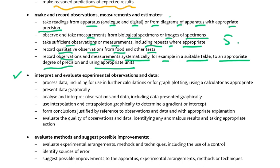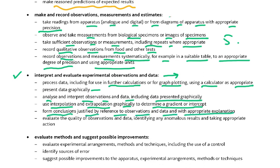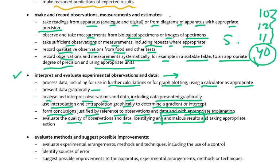Then interpret and evaluate experimental observations and data. Process data including for use in further calculations or graph plotting using a calculator as appropriate. Present data graphically. Analyze and interpret observations and data including data presented graphically. Use interpolation and extrapolation graphically to determine a gradient or intercept. Form conclusions justified by reference to observations and data with appropriate explanations. Evaluate the quality of observations and data, identifying any anomalous results. An anomalous result is one that doesn't fit the pattern — for instance if the readings are 10, 12, 11, and suddenly there is a reading of 40, that is not the trend.